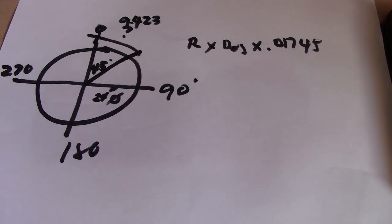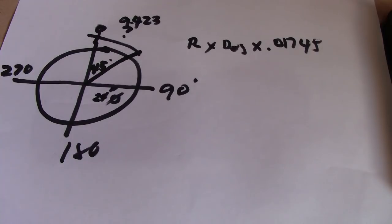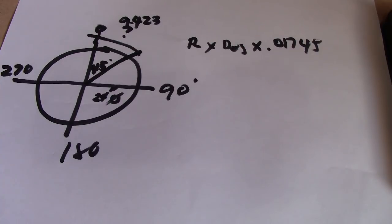So this is how to compute the arc length. First formula: radius × degrees × 0.01745. Second formula: outside diameter × 3.1416 ÷ 360 × given degrees = arc length. That's all for now guys. I hope you learned how to compute the arc length. Thank you so much and have a nice day — bye bye, see you next time!